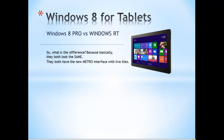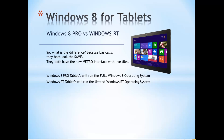To understand the difference between the two we have to understand what kind of operating system they're running. You may think they're both running Windows 8, but that is not the case. The Windows 8 Pro tablets run the full Windows 8 operating system that you may see on a laptop or desktop computer. The Windows RT tablets run the limited Windows RT operating system, so the differences basically boil down to the differences between Windows 8 and Windows RT.